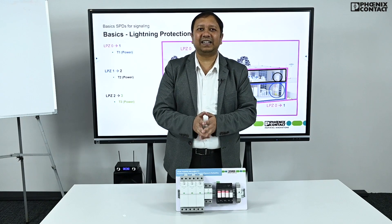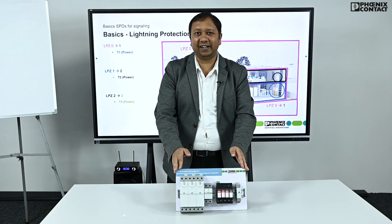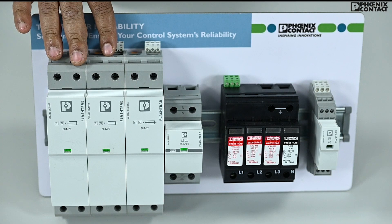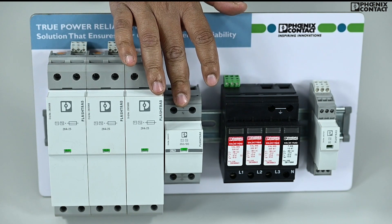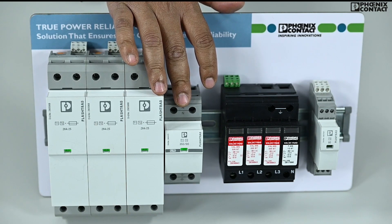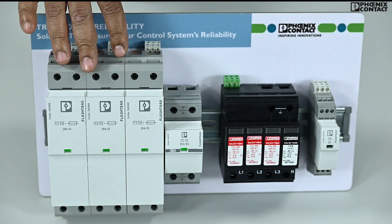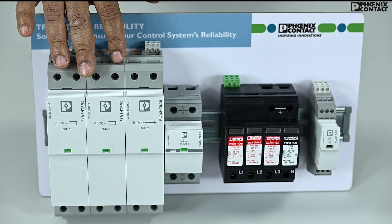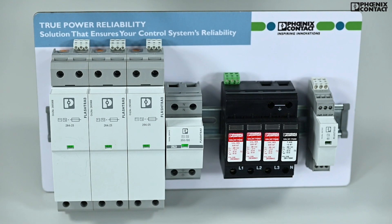Let's understand the types of SPD from the displayed samples. This white 3-pole line-to-neutral and 1-pole neutral-to-earth unit is a FLT ACC series Type 1 surge protection device, which protects from lightning surges and is installed at the main distribution board.